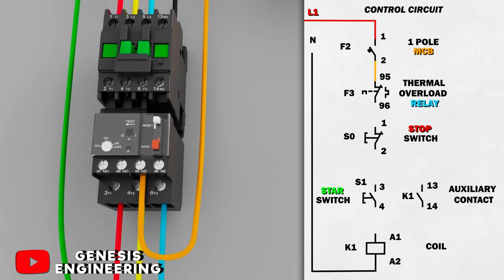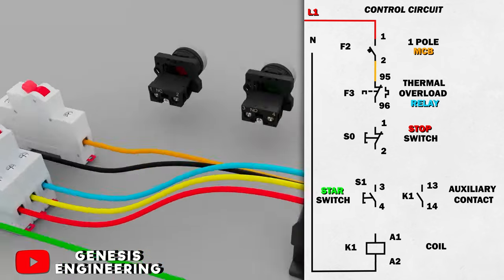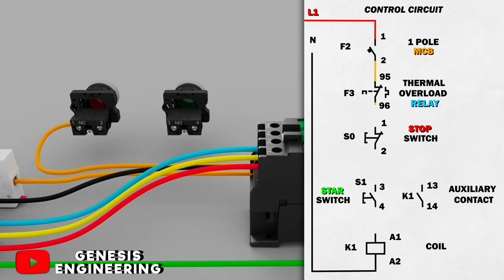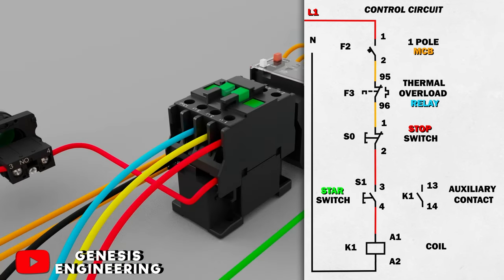Then we go out with the conductor on terminal 96 of the thermal relay and connect it to terminal 1 of the normally closed red button. In the output of the red button, terminal 2, we connect to terminal 3 of the green button, and we leave terminal 4 of the green button and connect to A1 of the contactor.